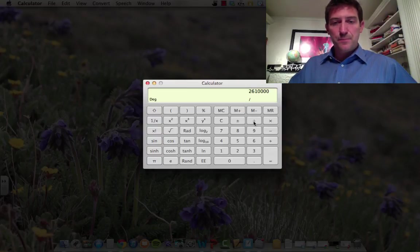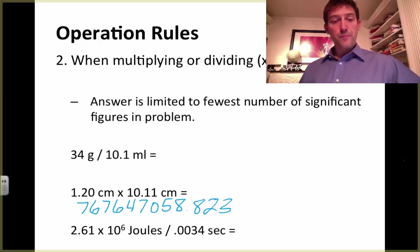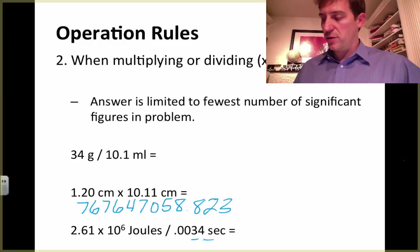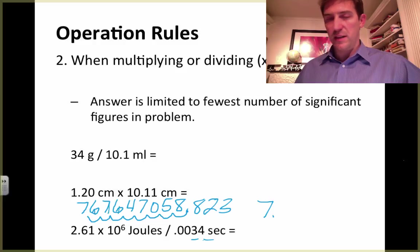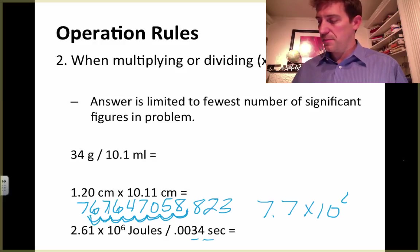I take that and divide it by my other number, which was 0.0034 seconds. I hit enter and get this huge number. Transferring that number to our slide: we know our answer can only have two significant figures, because in division we count the smallest number of significant figures, and this has way too many. So I'm going to turn it into exponential notation. Moving the decimal 1, 2, 3, 4, 5, 6, 7, 8 places gives me 7.676, but I need to round it because I can only have 2 significant figures — so the answer is 7.7 times 10 to the 8th, and this is joules per second, or watts.